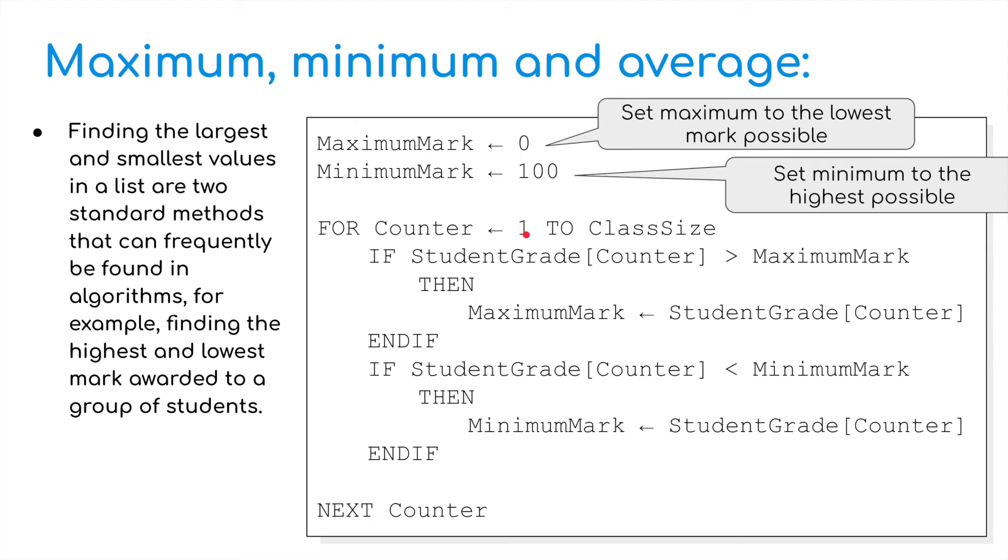Then in order to work out an average and use maximum and minimum values, I've got a little program here which demonstrates this. So finding the largest and smallest values in a list are two standard methods that can frequently be found in algorithms. For example, finding the highest and lowest mark awarded to a group of students. So this is great. If we are reading in, again, if we've got a document, a CSV file maybe, a text file called class size, we can have however many students in there.